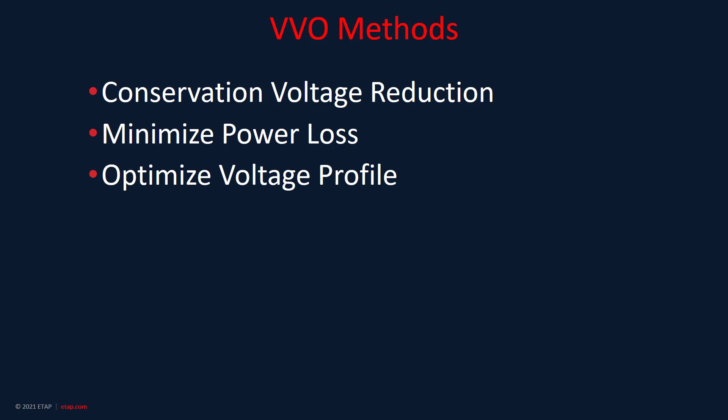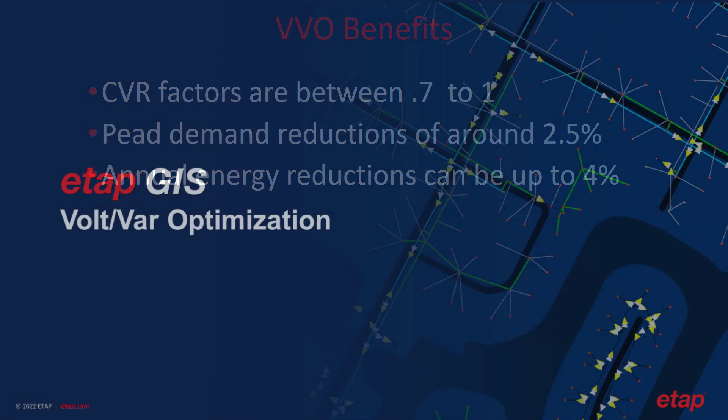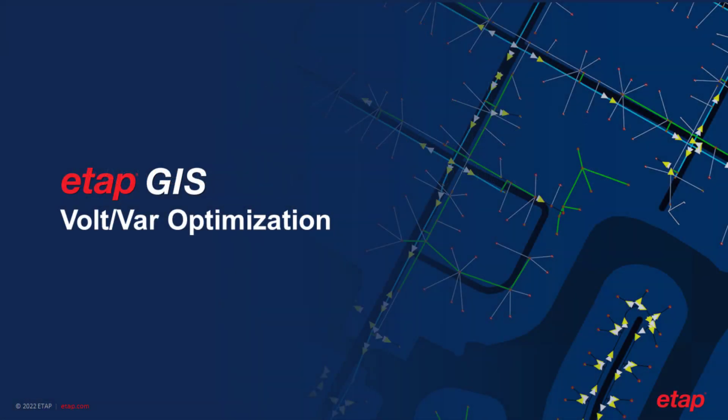The CVR factor of 1 means that a 1 percent reduction in voltage results in a 1 percent reduction in energy. Just keep voltage close to normal within voltage swings. A positive CVR factor is desired. Thank you everyone for attending this presentation.